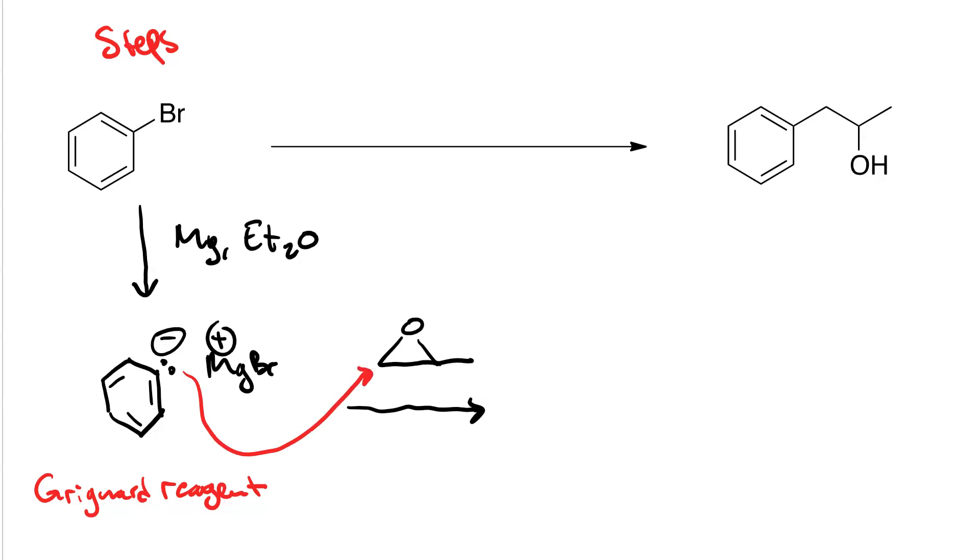The Grignard attacks the less-substituted carbon, opening the ring of the epoxide, and yielding an alkoxide. Let's point out that this bond came from this pair of electrons. And how do we get from our alkoxide to our alcohol? We need a source of protons.